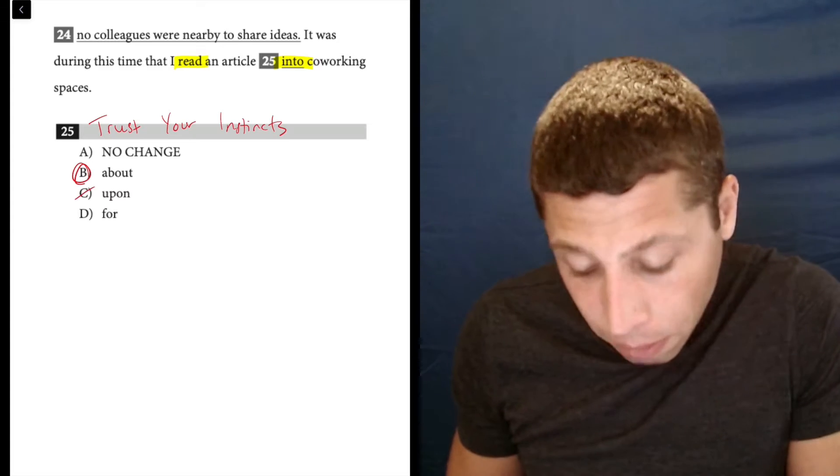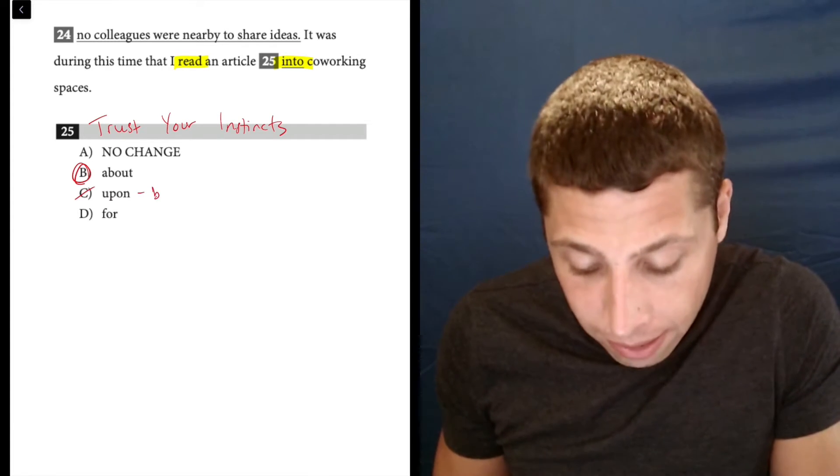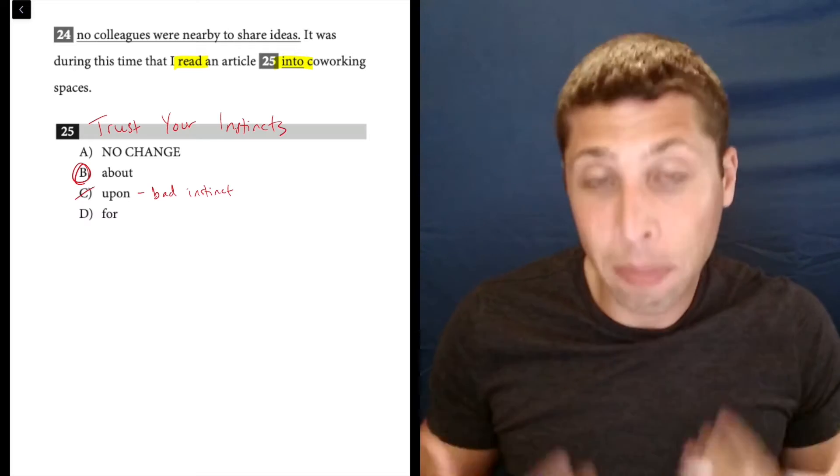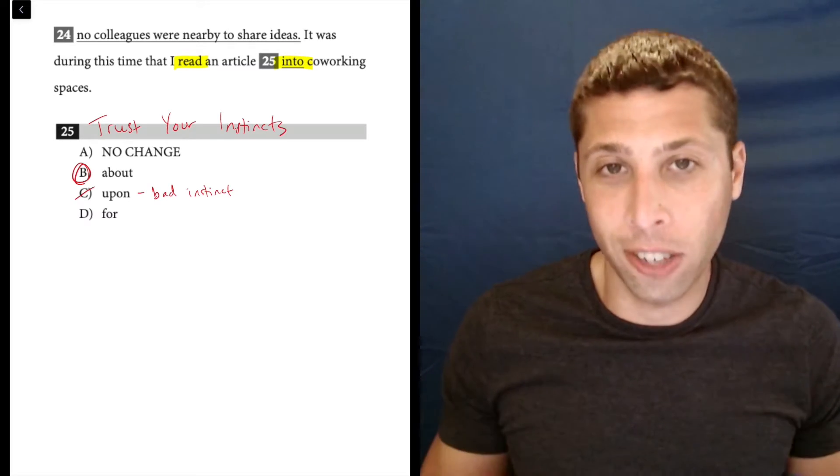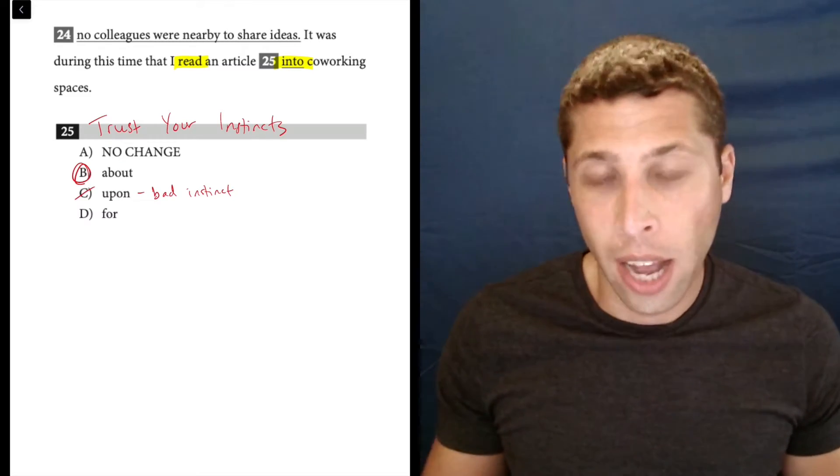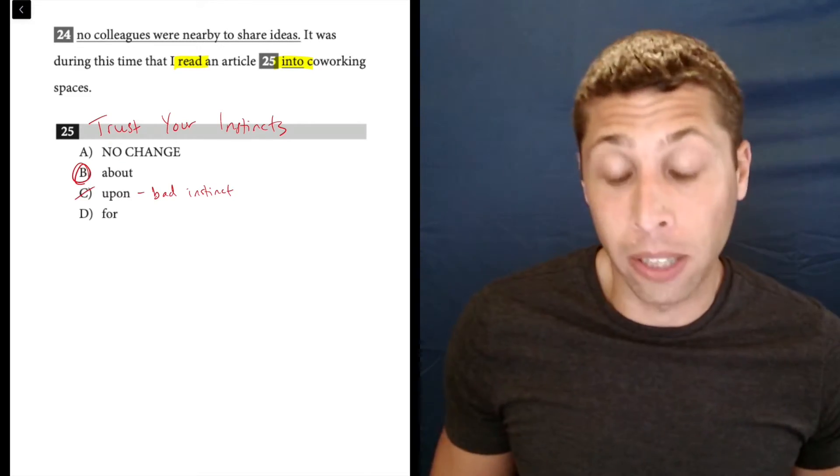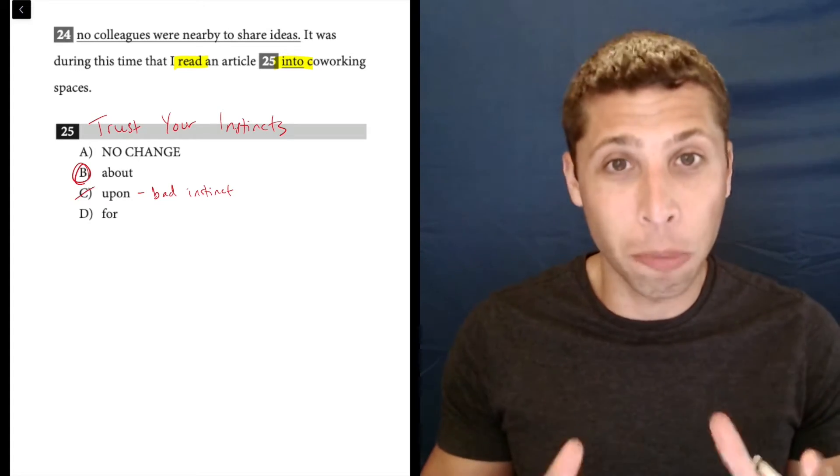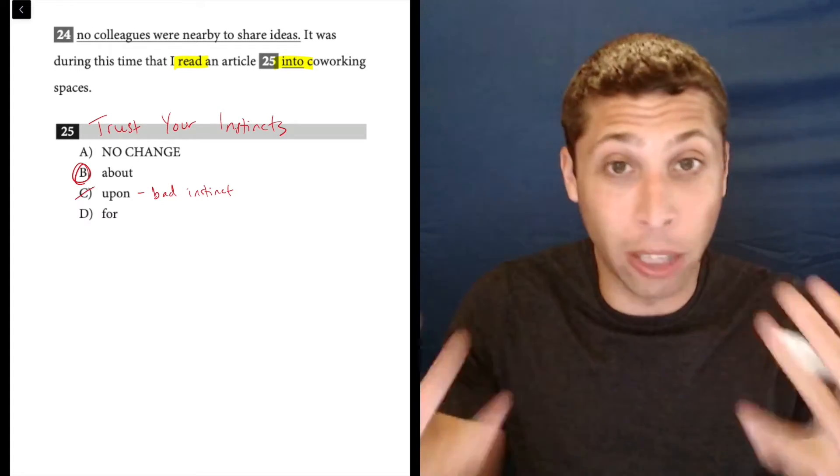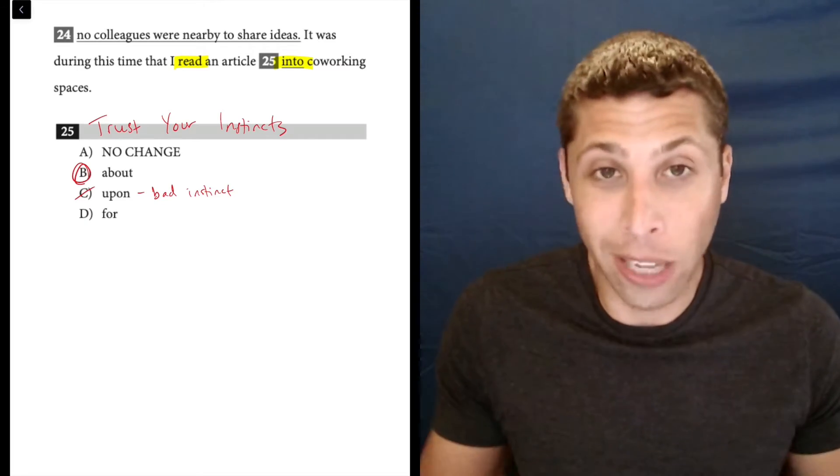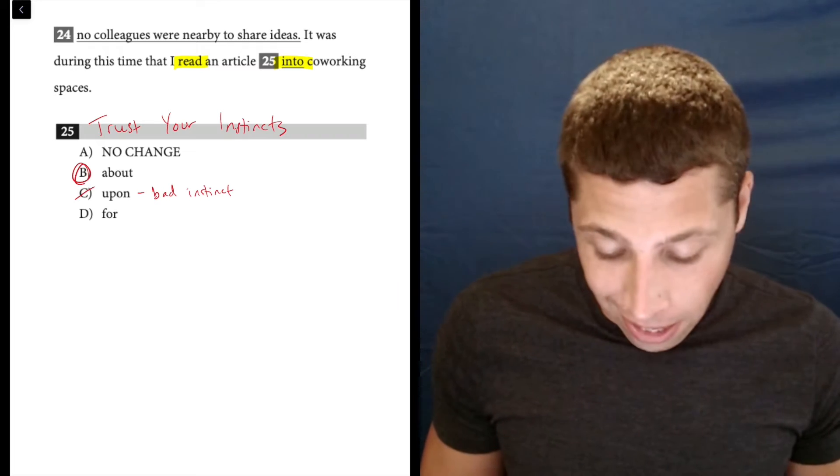I think C, if you pick this, this is a bad instinct. You shouldn't pick something like this. This to me sounds unnecessarily fancy, right? Like you're trying to sound smart, and you're like, oh, let me sound like Shakespeare. No. That's not our job on the SAT writing. We are just supposed to write like we talk, like normal people, and so you don't read upon something. That's just weird. Don't be weird.